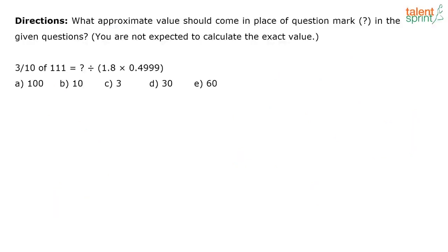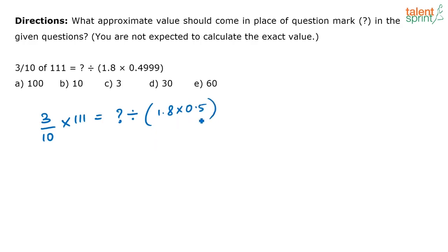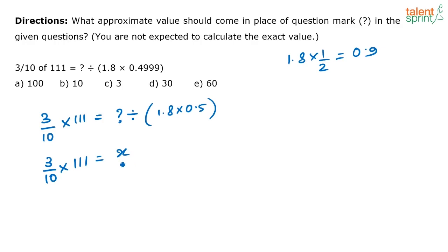The next question is also an approximation. What is given: 3 by 10 into 111 is equal to question mark divided by 1.8 into 0.5. What is 0.5? It is 1 by 2. So 1.8 into 1 by 2 is 0.9 — half of 1.8 is 0.9. So the question is: 3 by 10 into 111 equals x divided by 0.9. You have to find the value of x.